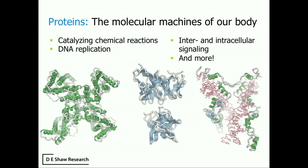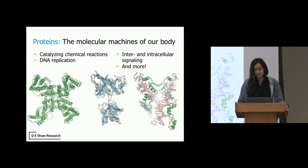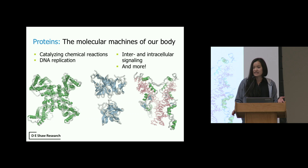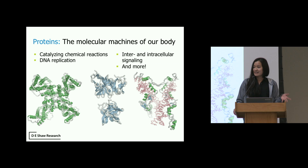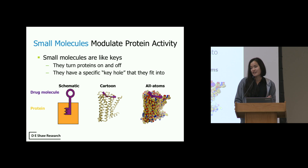The antibody-antigen complex has hypervariable loops that mutate very readily in order to bind and detect foreign objects in your body, making them very important for your immune response. On the right side, we have a transcription factor protein that's binding to DNA — responsible for gene transcription and another very important piece of how our bodies work. Small molecules are smaller compounds which bind to these proteins and change the activity of those proteins, either increasing their efficacy or turning them off.